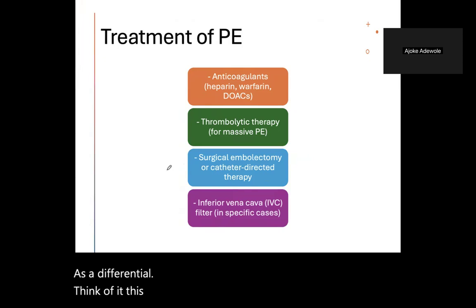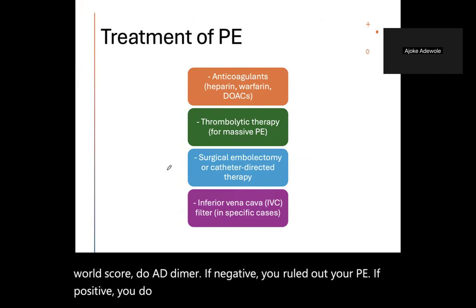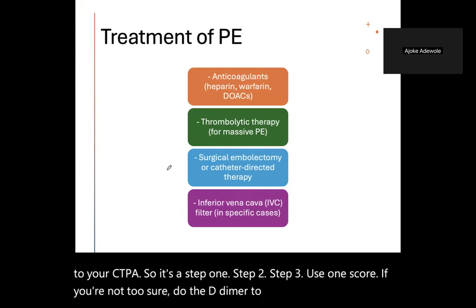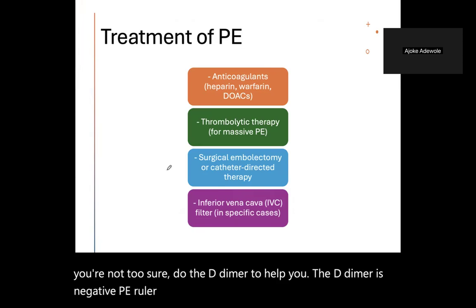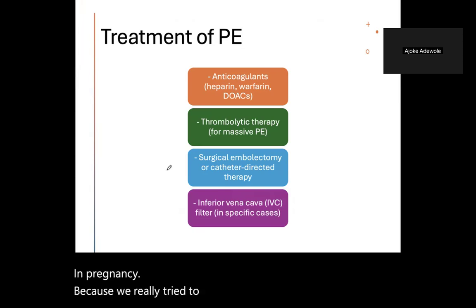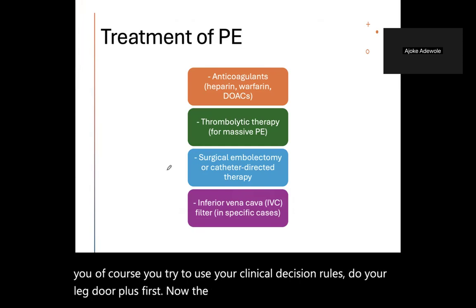The clinical pathway: use the Wells score. If low or intermediate, do a D-dimer — if negative, rule out PE; if positive, do a CTPA. If high Wells score, go straight to CTPA. Step one: Wells score. Step two: D-dimer if unsure. Step three: CTPA if D-dimer positive. In pregnancy, we try to avoid CTPA — do a VQ scan instead, use clinical decision rules, and do leg Dopplers first.